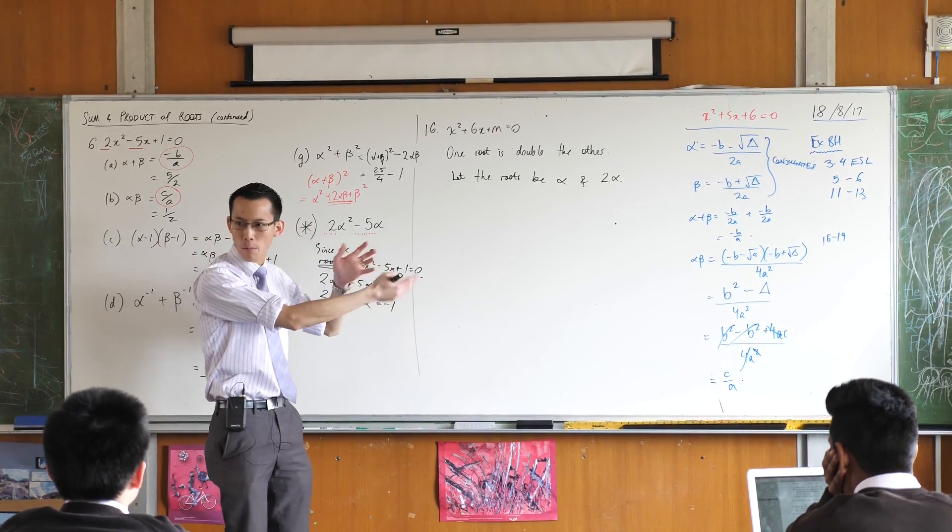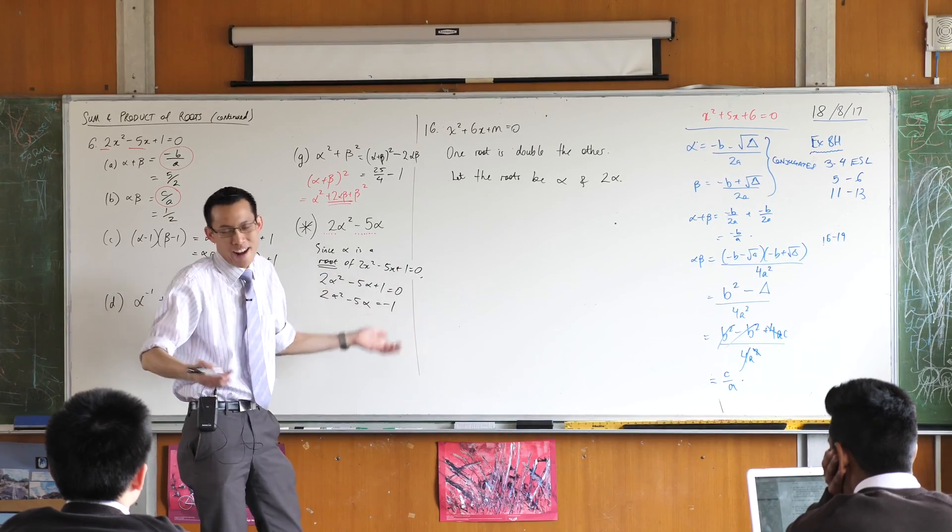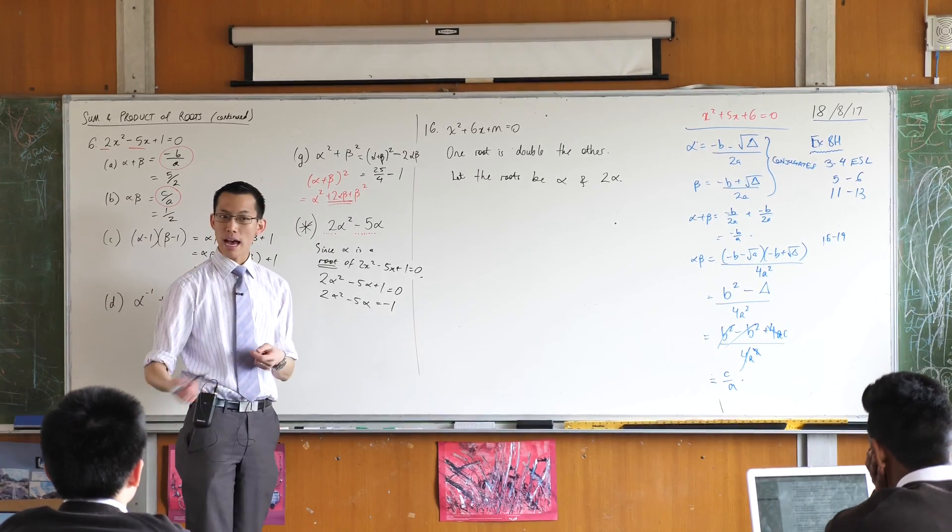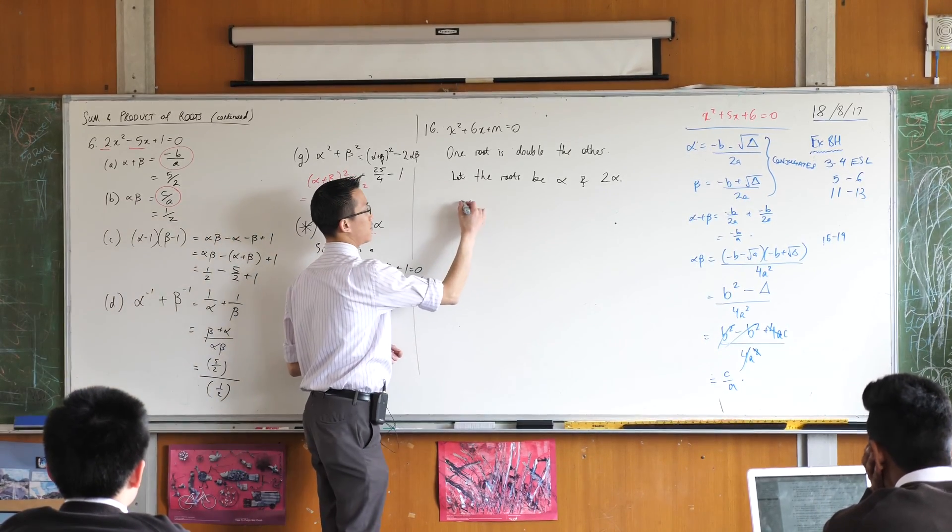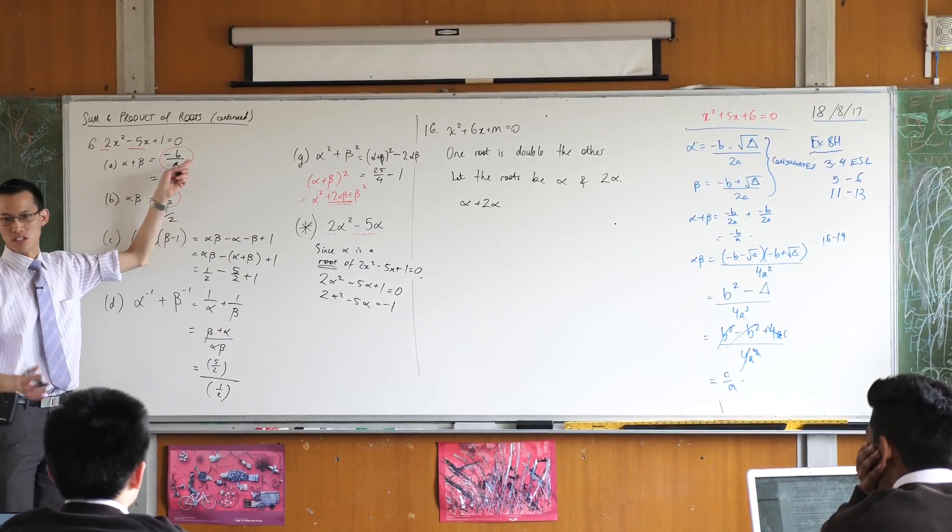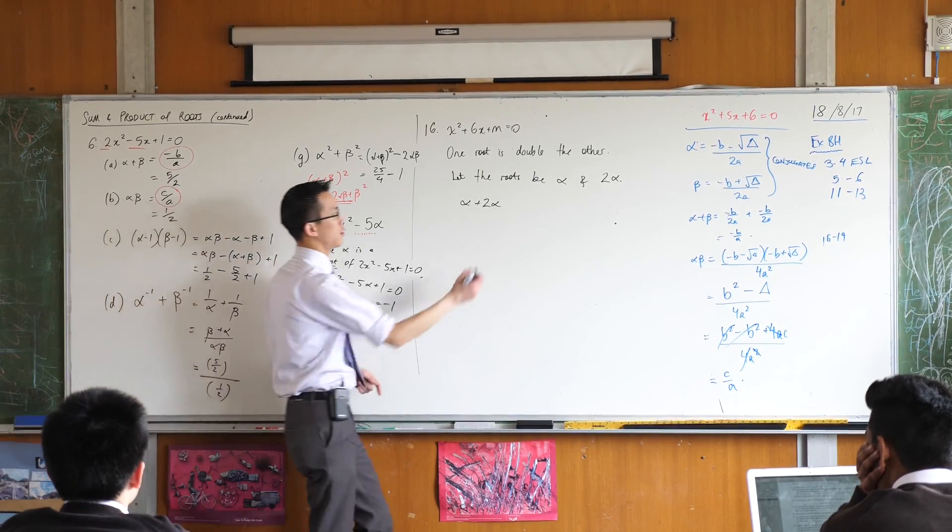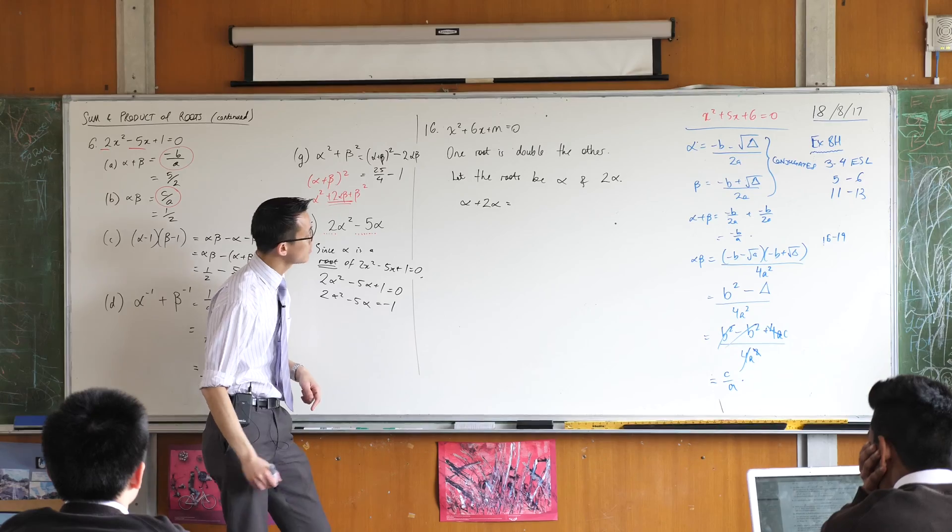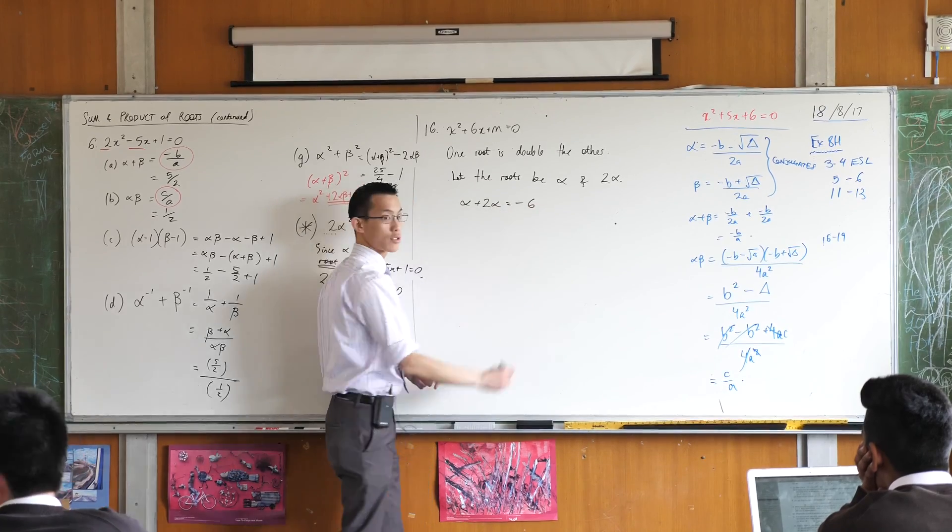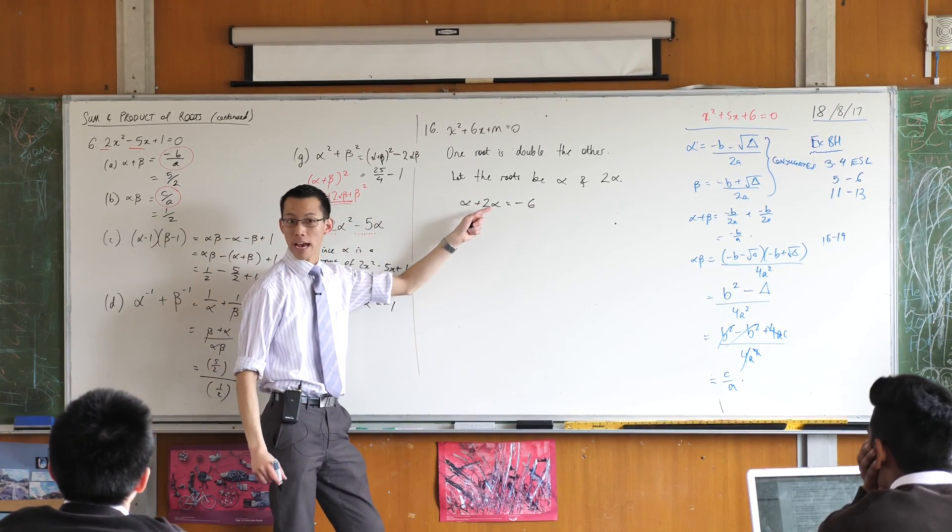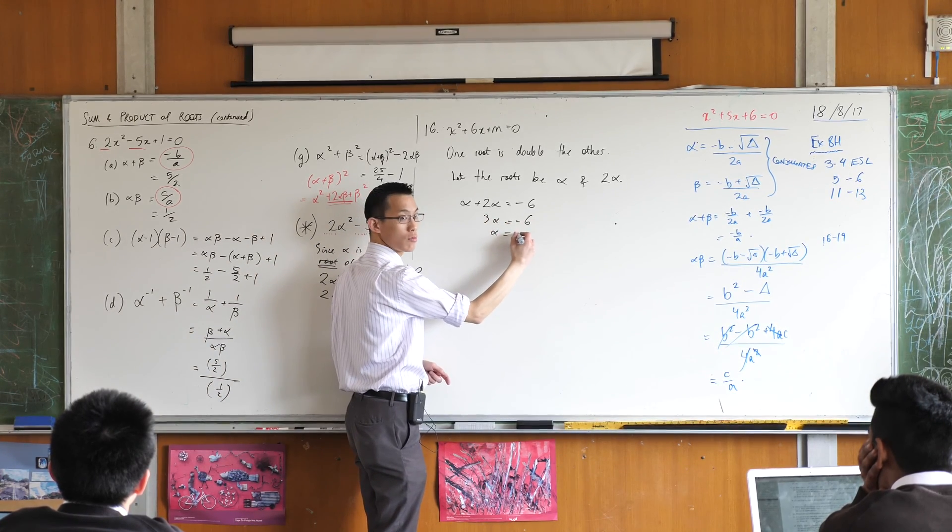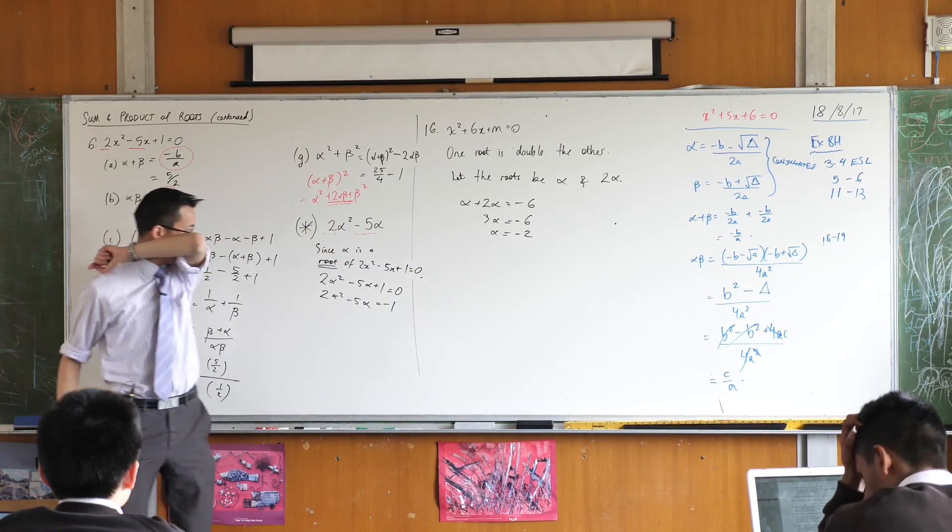Just as equally I could have called it alpha on 2 because one would still be double the other. Why am I avoiding that? Because I don't like fractions. So if the roots are alpha and 2 alpha, I can find the sum of roots just like I normally do with minus b on a. It's just it's not alpha plus beta, it's alpha plus 2 alpha. So what's this equal to? Minus b on a in this case is negative 6. So you can see here, I can already work out what alpha is. 3 alpha equals negative 6. So alpha is equal to negative 2.